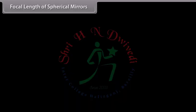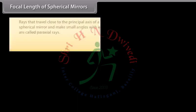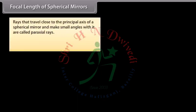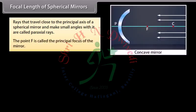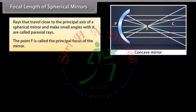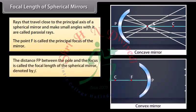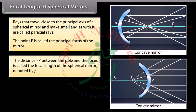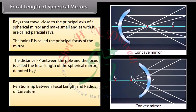Focal length of spherical mirrors. Rays that travel close to the principal axis of a spherical mirror and make small angles with it are called paraxial rays. The point F is called the principal focus of the mirror. The distance FP between the pole and the focus is called the focal length, denoted by F. The relationship between focal length and radius of curvature is: F is equal to R by 2.